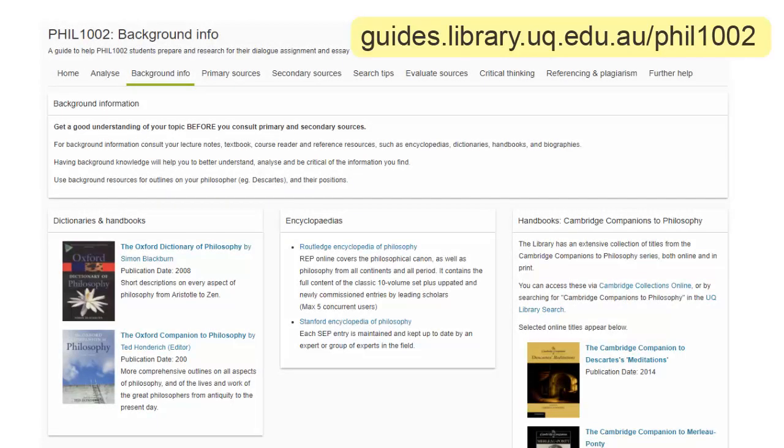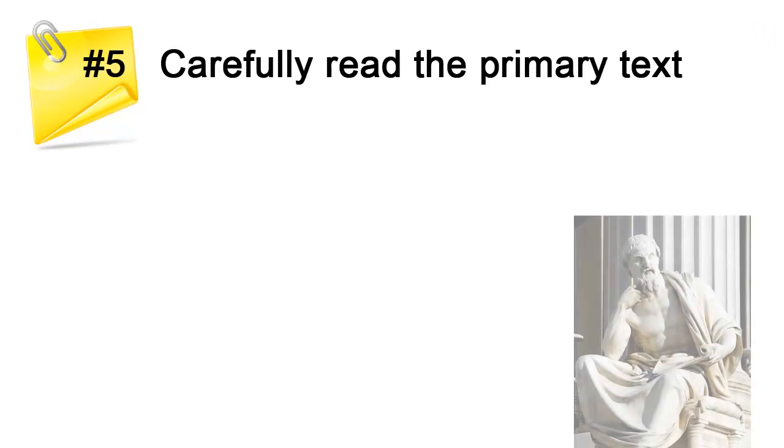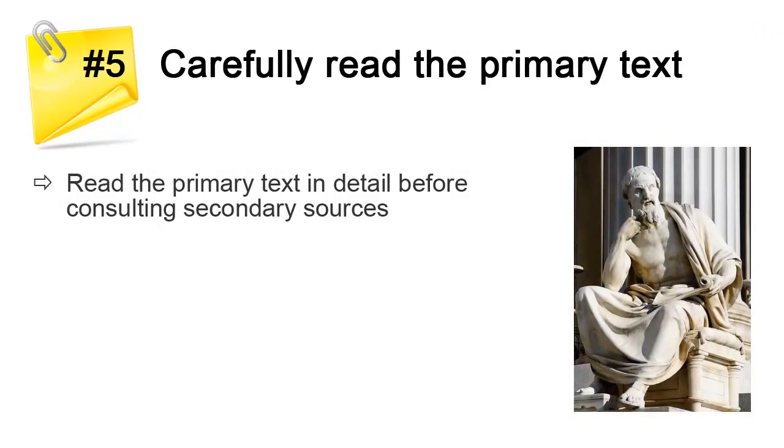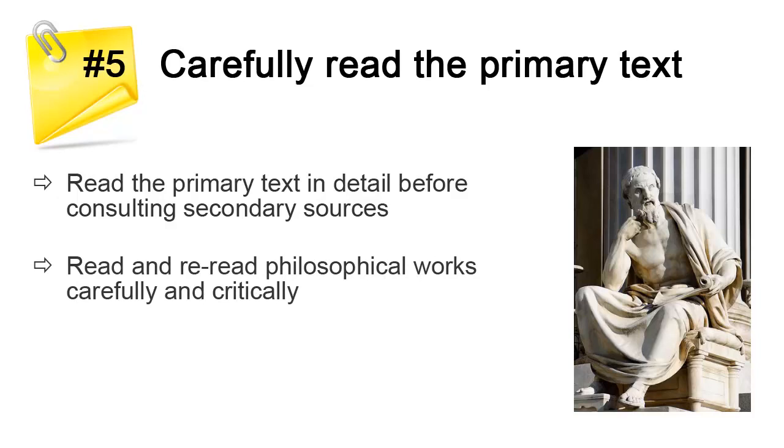You can find these resources on the Phil 1002 Library Guide. The primary text is the original work of the philosopher you are researching. Read the primary text in detail before you start researching and looking at secondary sources. In philosophy it is essential that you read and re-read philosophical works carefully and critically so you can develop an independent and analytical position.